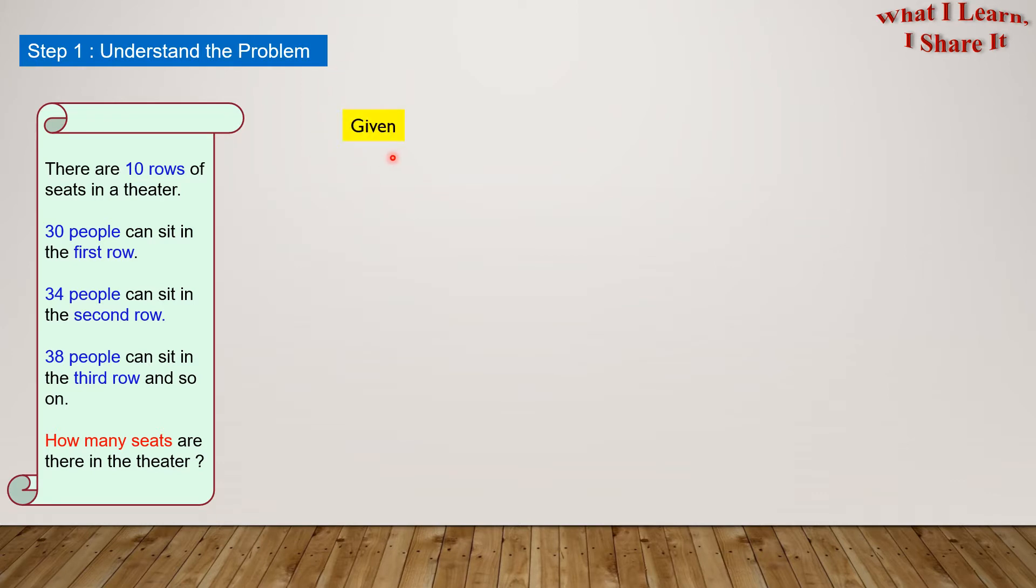So, what are we given? We are given all this information. There are 10 rows of seats in a theater. So, in our own words, we can write total rows equals 10. 30 people can sit in the first row. In our own words, we can write first row equals 30 people.